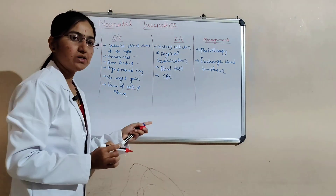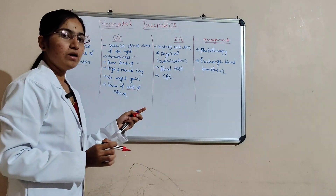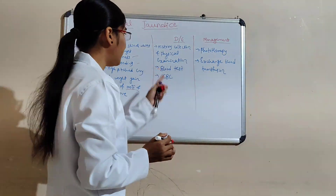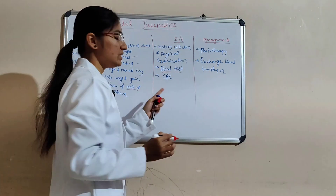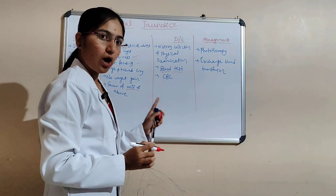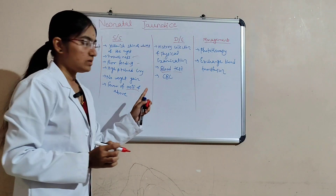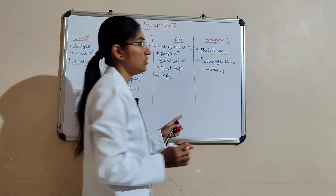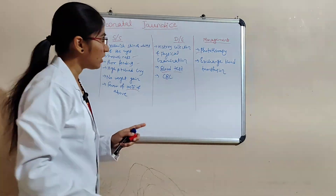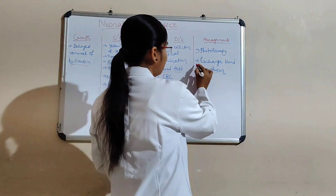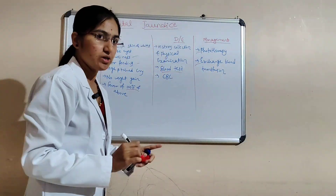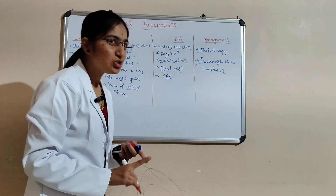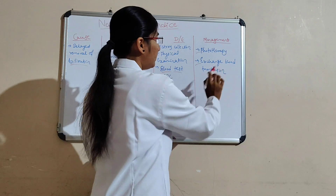For diagnostic evaluation: history collection, physical examination, and blood tests including CBC (complete blood count). For management, the main treatment is phototherapy. In pathological jaundice, exchange blood transfusion is done.